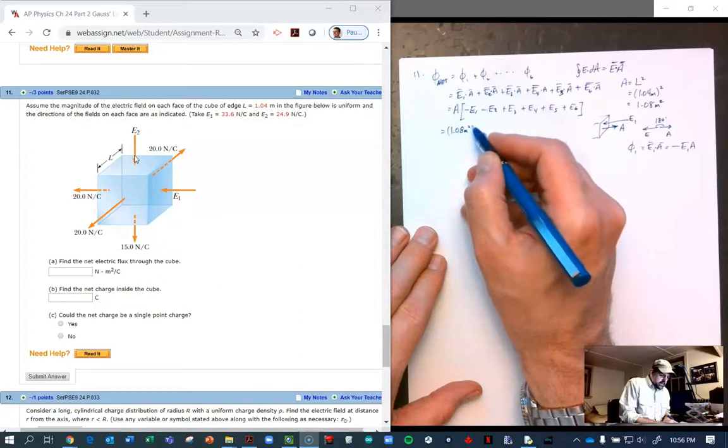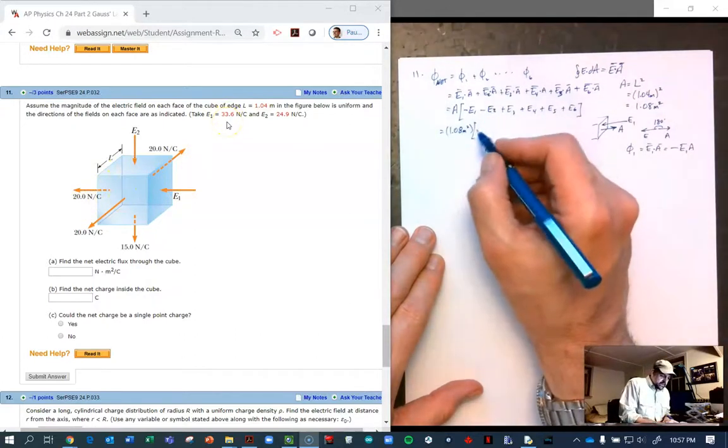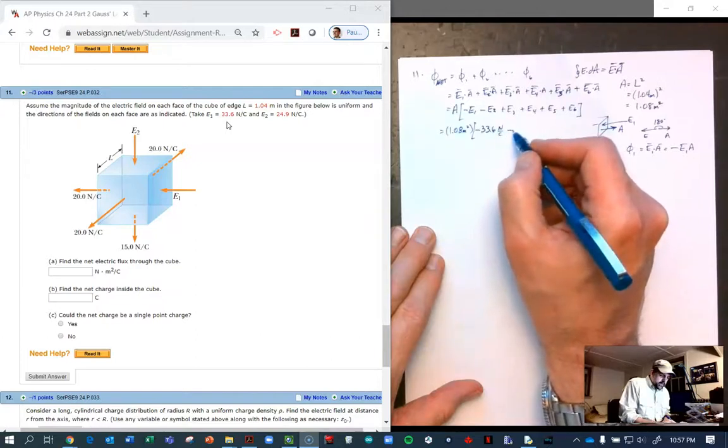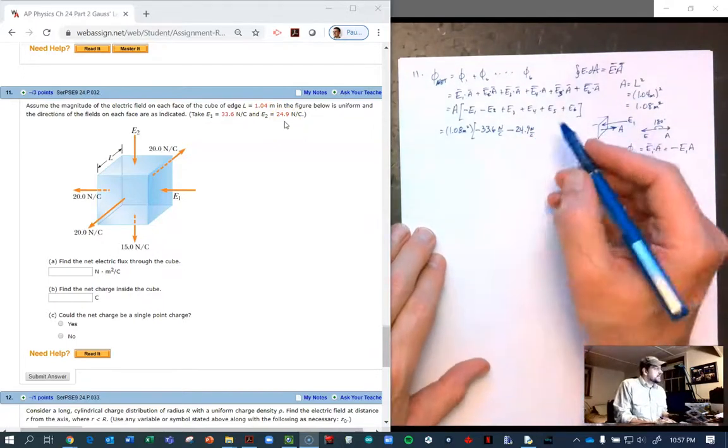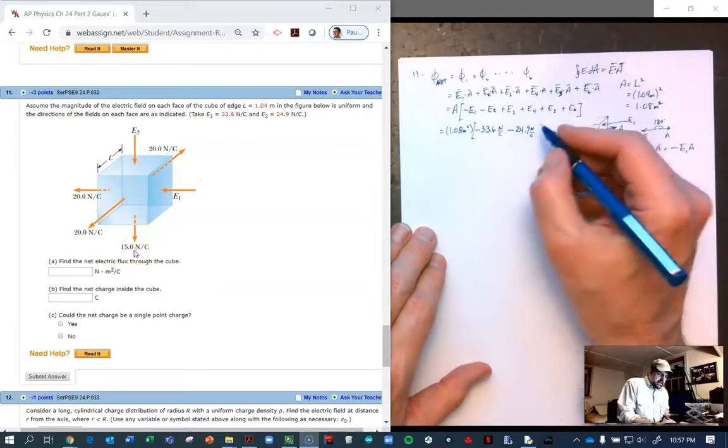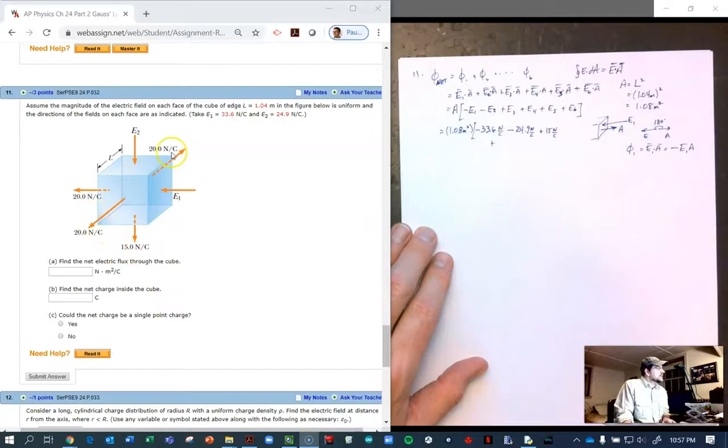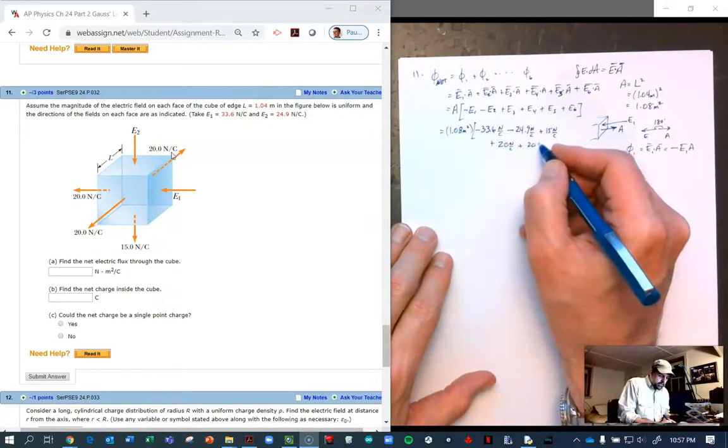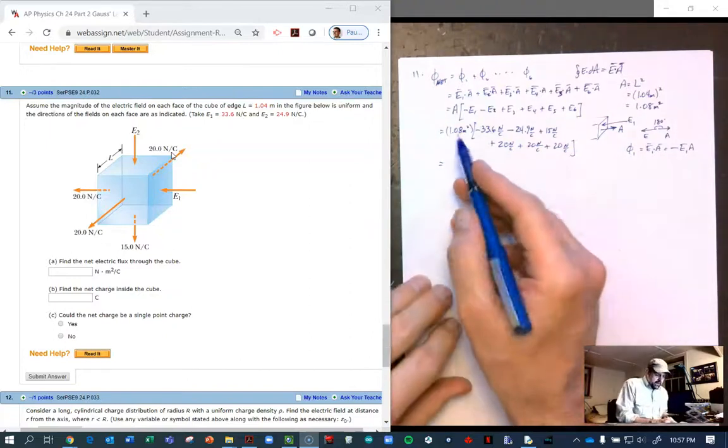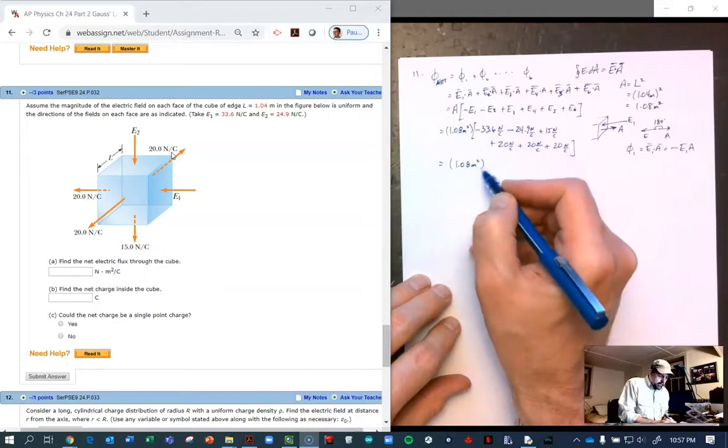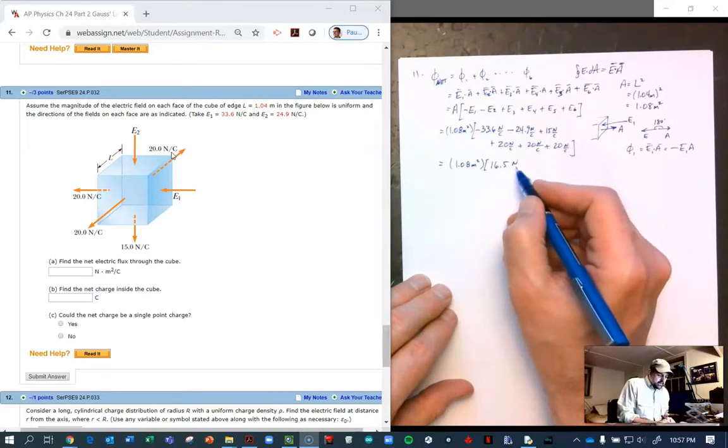Now we can just plug in numbers. 1.08 square meters, we already did that calculation. Negative E1, my E1 is 33.6. E2 is 24.9. E3, I'm going to call this bottom one E3, plus 15. I'm sorry I'm running out of space. And then the rest are 20, 20, 20, 20. So when you add all those up, noting that these are negative, you get 16.5 newtons per coulomb positive.